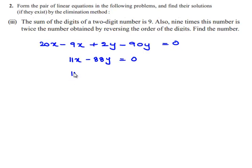Now, we can take 11 as a common. x minus 8y is equal to 0. This implies x minus 8y is equal to 0 is the second equation.